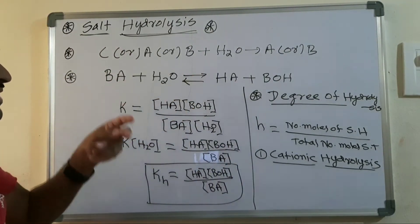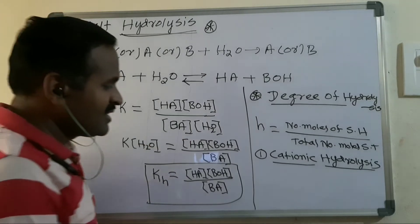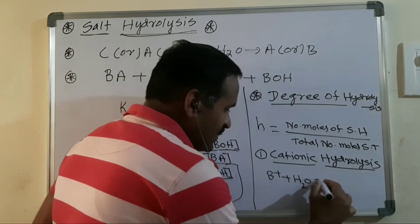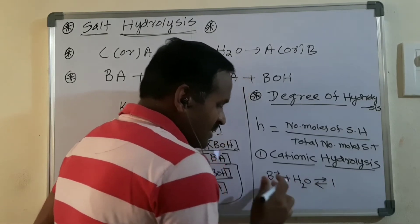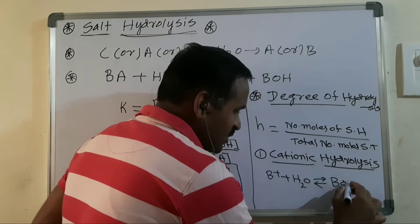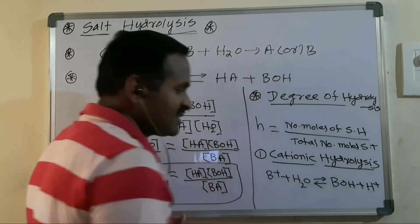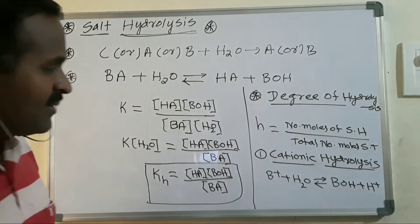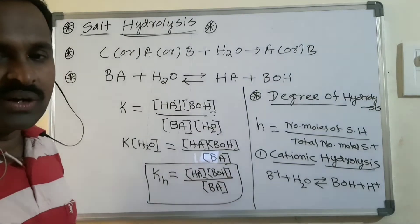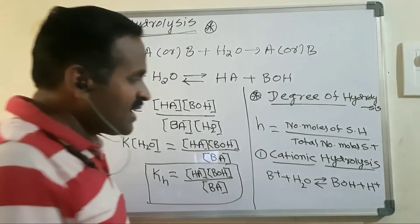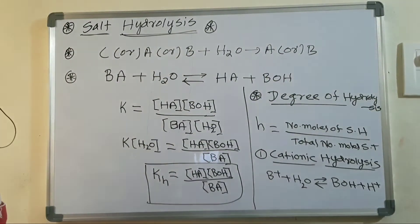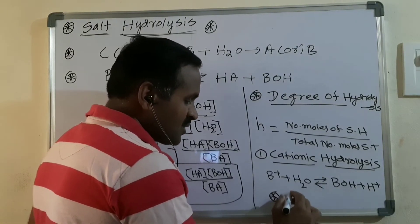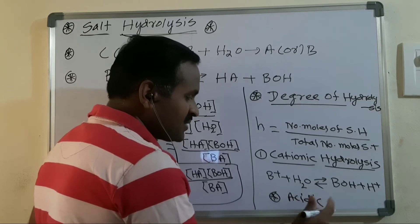For example, salt BA dissociates into B⁺ and A⁻. In cationic hydrolysis, B⁺ reacts with water to form BOH, and H⁺ ions are left in the resulting solution. Because H⁺ ions are present, the resulting solution is acidic in nature.